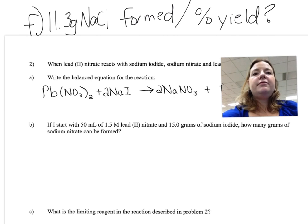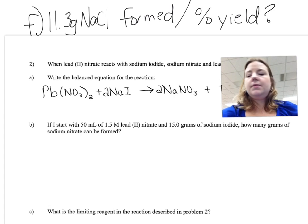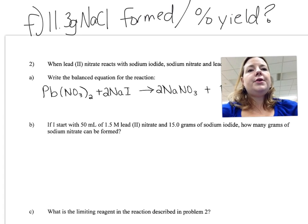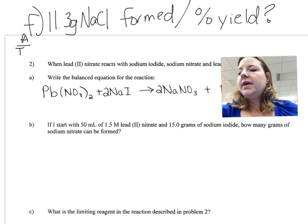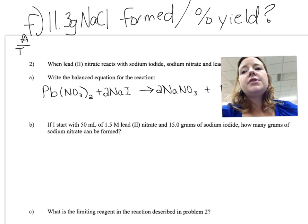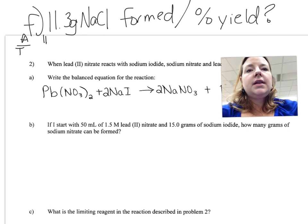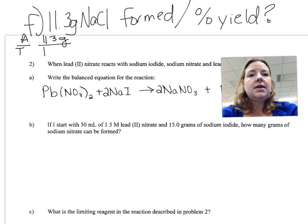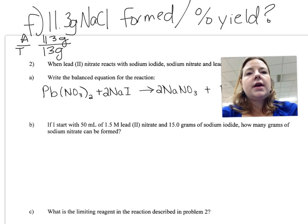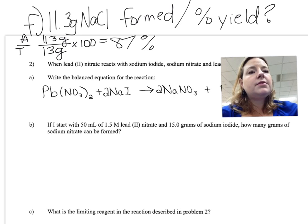The last problem wants you to calculate the percent yield. It tells us that 11.3 grams are actually formed — that's your actual yield. Our theoretical yield is what we calculated in Part B, which was 13 grams. So I take 11.3 divided by 13, multiply by 100, and the percent yield is 87%.